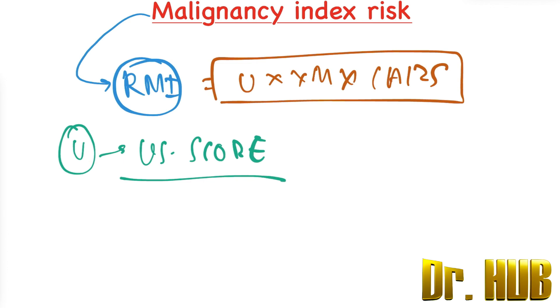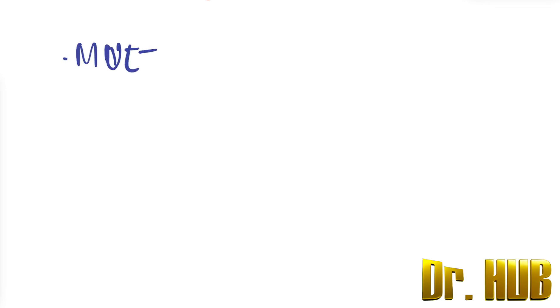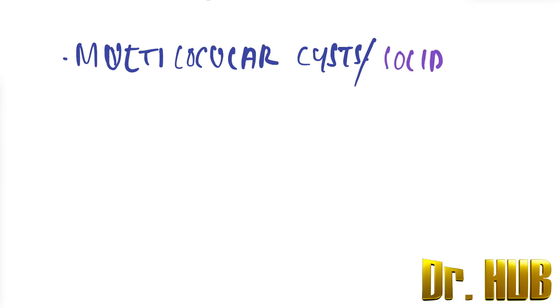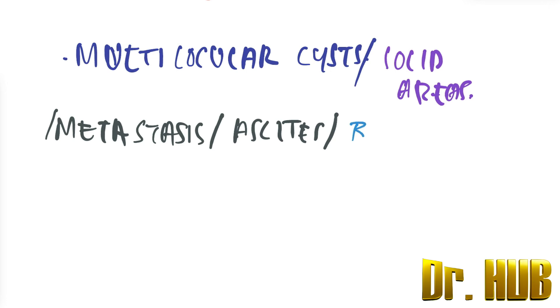The ultrasound result is scored one point for each of the following characteristics: presence of a multilocular cyst, presence of solid areas, presence of metastasis, presence of ascites, and bilateral lesions.